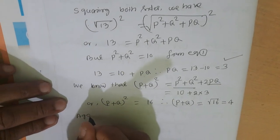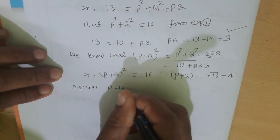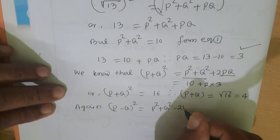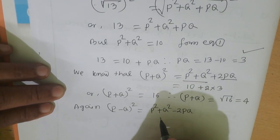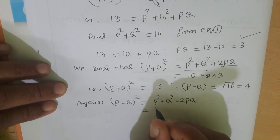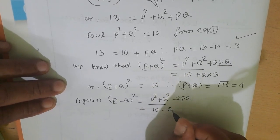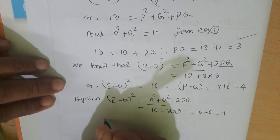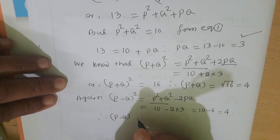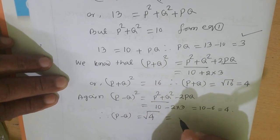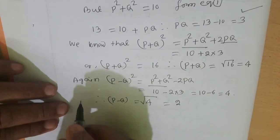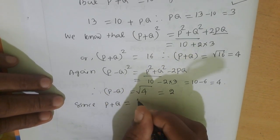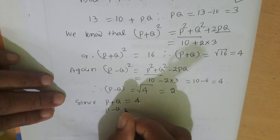Again, (P − Q)² = P² + Q² − 2PQ. Putting all the values: 10 − 2×3 = 10 − 6 = 4. Therefore P − Q = √4 = 2. Since P + Q = 4 and P − Q = 2.